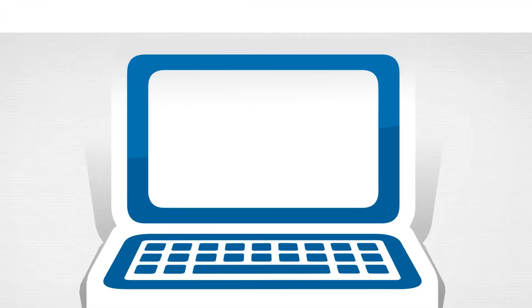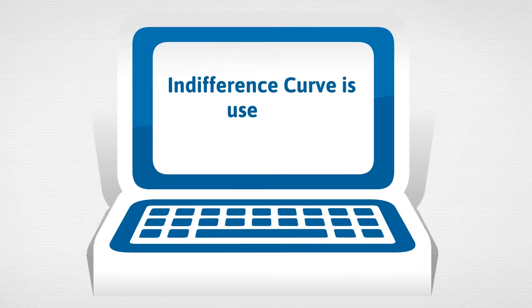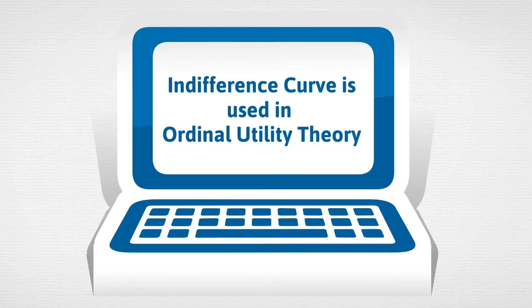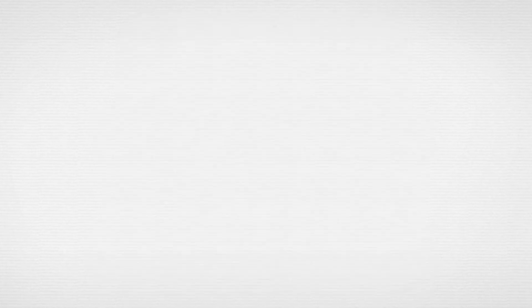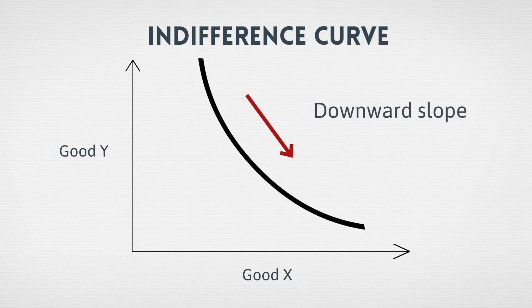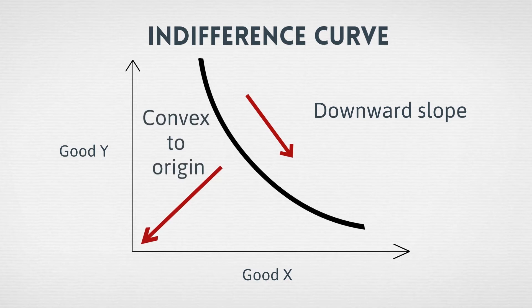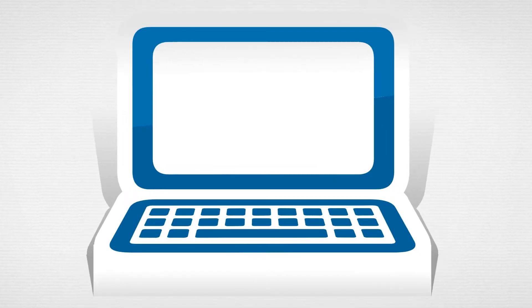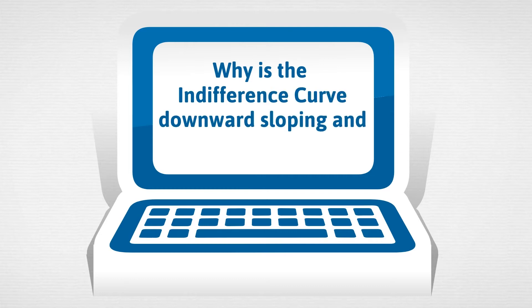Indifference curve is a popular curve that you will see in the Ordinal Utility Theory. The x-axis and y-axis measure two commodities purchased by a consumer, and the curve shows a certain level of utility derived from the purchase. The usual shape of an indifference curve is a downward sloping convex curve.